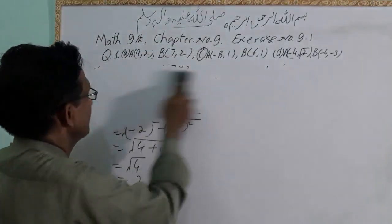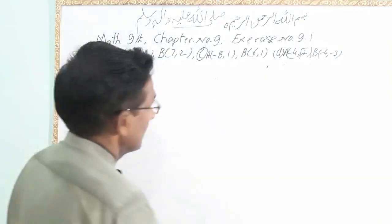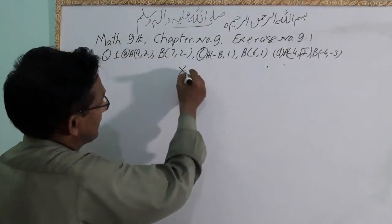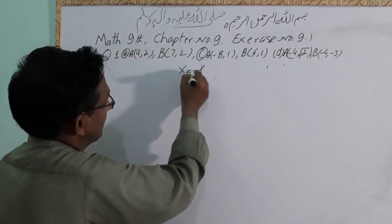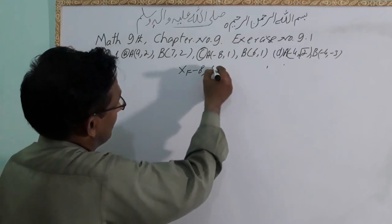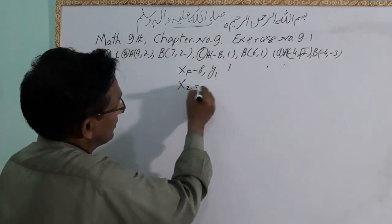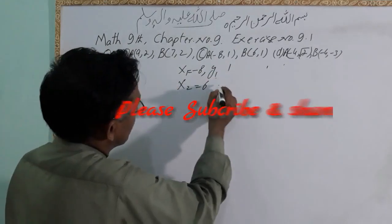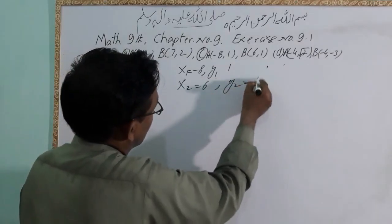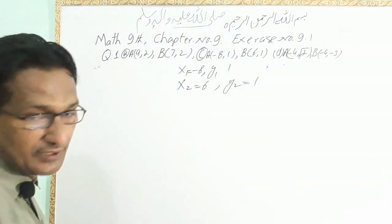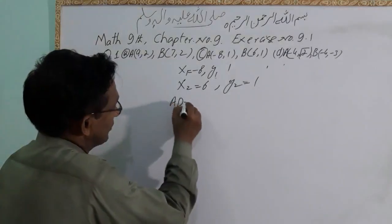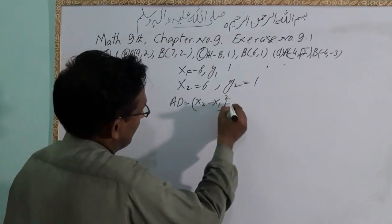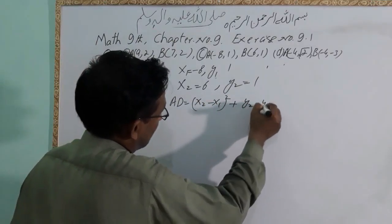This is question number C. For part C: x1 is minus 8, y1 is 1, x2 is equal to 6, and y2 is equal to 1. Put the value in the distance formula. D is equal to square root of (x2 minus x1) squared plus (y2 minus y1) squared.